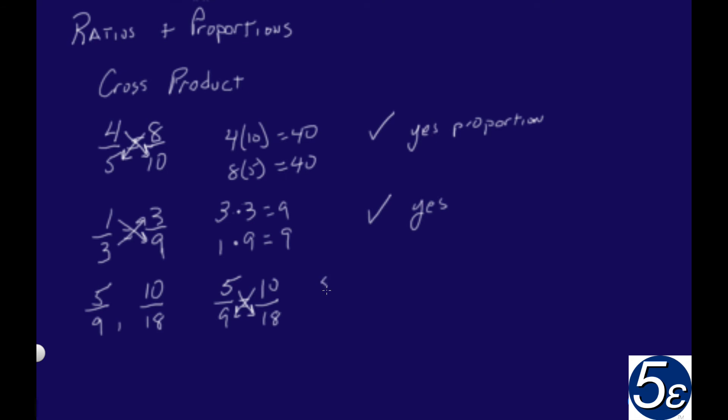We end up with 5 times 18, and that equals 90, and 9 times 10, and that equals 90. So we also end up with a proportion as well.